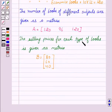The selling prices for each type of books is given as a matrix B which is 80, 60 and 40.